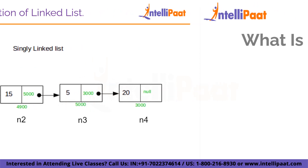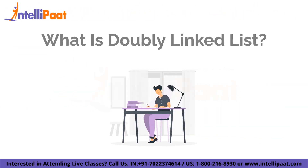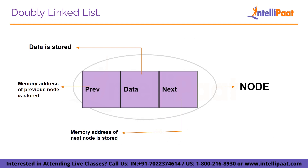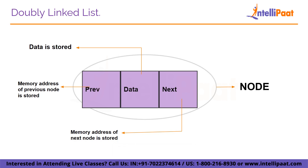Now let's move to our main agenda: doubly linked list in C. A doubly linked list is a linked list which traverses in both directions, unlike a singly linked list which traverses in only one direction. Each node in a doubly linked list contains three parts: 'previous', which contains the address of the previous node; 'data', which contains the actual data; and 'next', which contains the address of the next node. This bidirectional traversal provides flexibility.